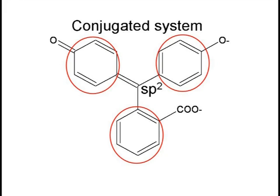This is called a conjugated system. The conjugated system will emit the specific color that we can see, which is pink.